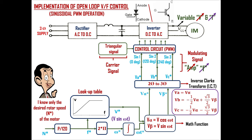The inverse Clarke transform block is readily available in PSIM or MATLAB simulation environments. Finally, the desired three-phase va*, vb*, and vc* are given to the PWM control circuit, where they are compared to the triangular carrier signal to generate gate signals for the switches in the inverter. At last the inverter gives the desired voltage and frequency based on the desired rotor speed. Since both voltage and frequency are changed up to the rated voltage, the maximum available torque is maintained and efficiency is also high.